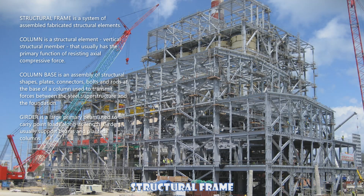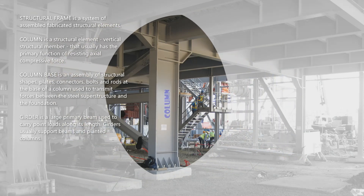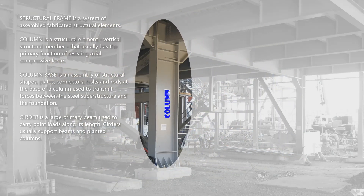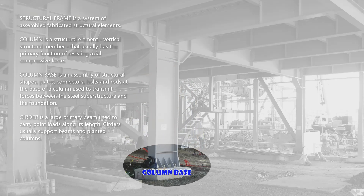A structural frame is a system of assembled fabricated structural elements. A column is a vertical structural member that has the primary function of resisting axial compressive force. A column base is an assembly of structural shapes, plates, connectors, bolts, and rods at the base of a column, used to transmit forces between the steel superstructure and the foundation.